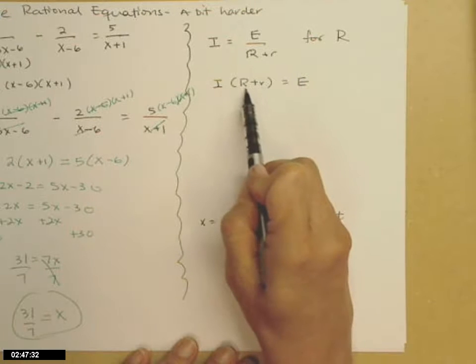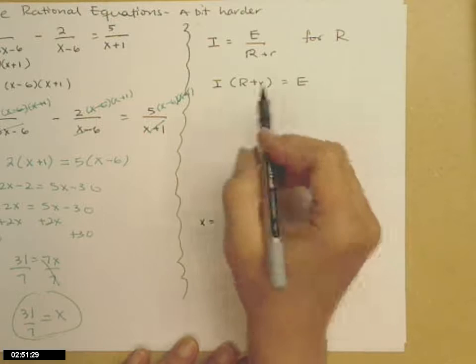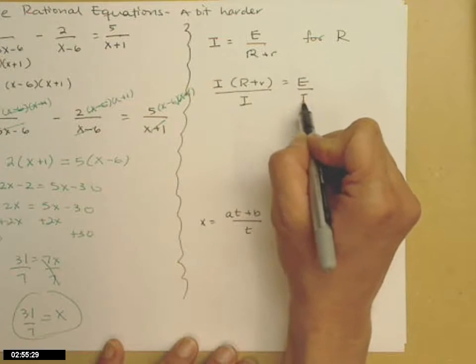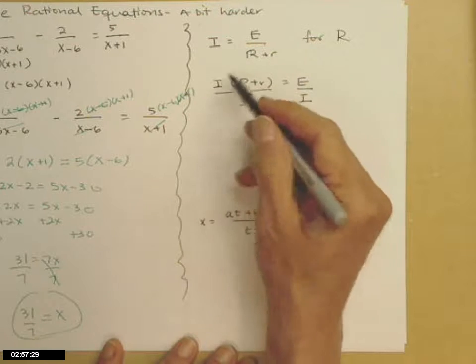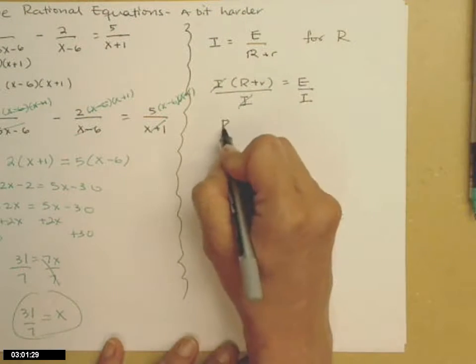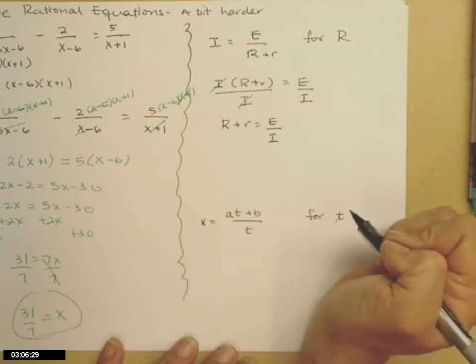And now I still need to get to the capital R, which is inside these parentheses, which have the i attached. A couple of ways you can go from here. I'm going to go ahead and divide both sides by i, because it's i times everything else. So that cancels these guys. Gets me here.